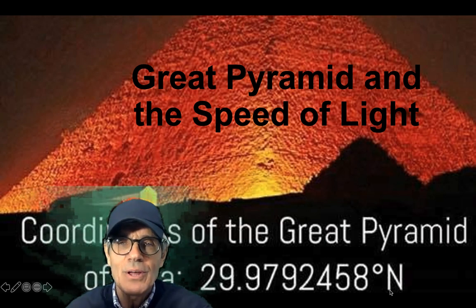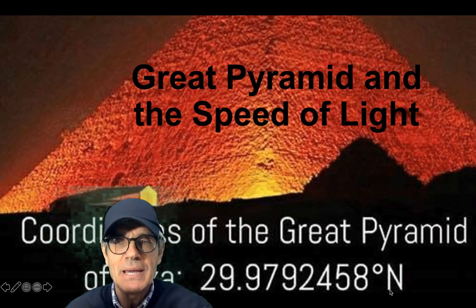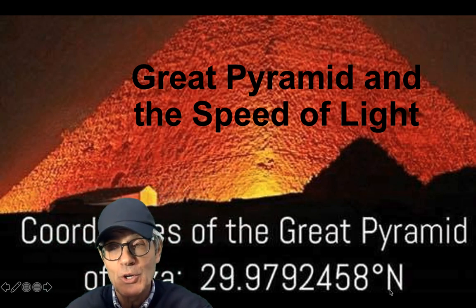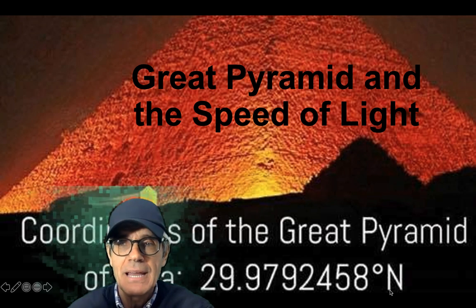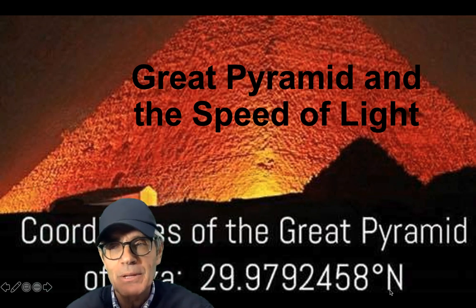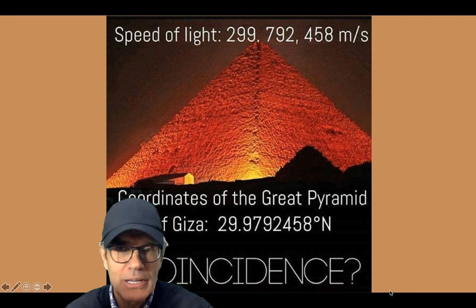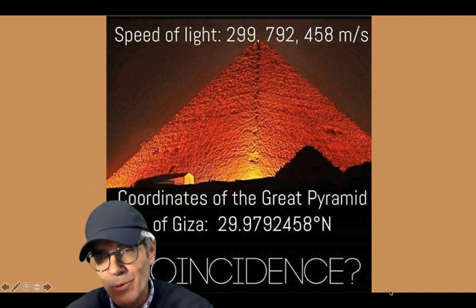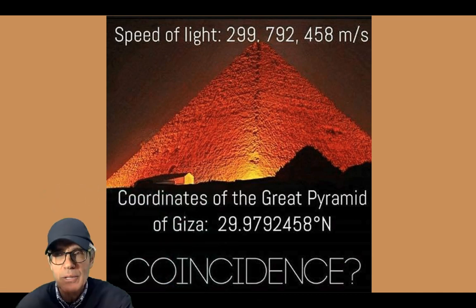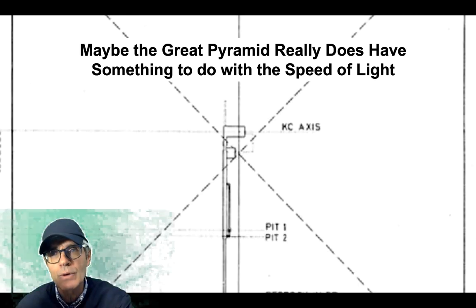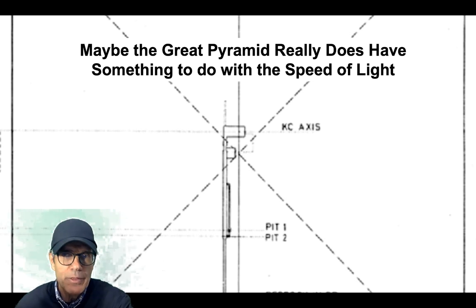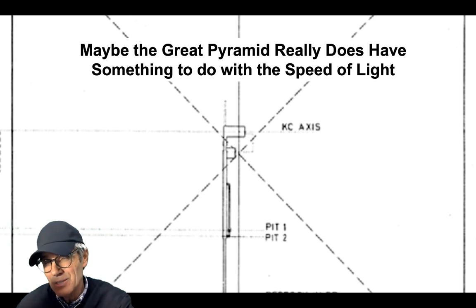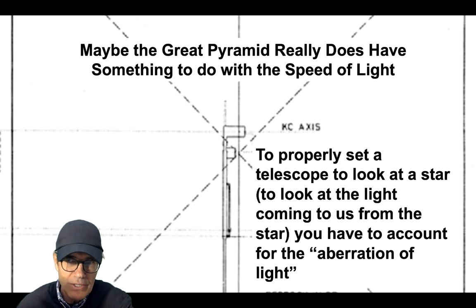There's this claim that is often made that the Great Pyramid coordinates are the speed of light. It's not really the coordinates — we'll see as we look at this video whether this is a coincidence or not. Before I do, I just wanted to say a couple things about whether the Great Pyramid really has anything to do with the speed of light, even if its GPS coordinates don't.